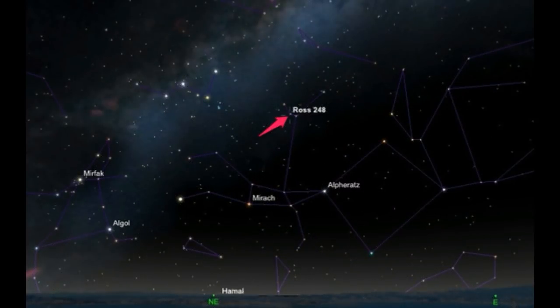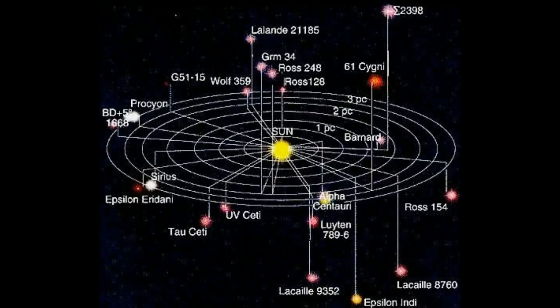Scientists thought Ross 248 may have a brown dwarf as a companion, but they have not yet confirmed that. We don't know much about it, other than that it moves super fast towards us and will be very close very soon.